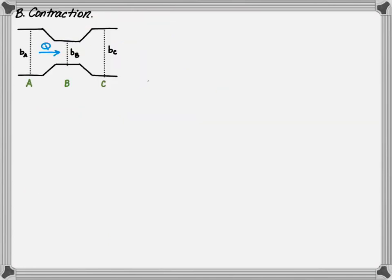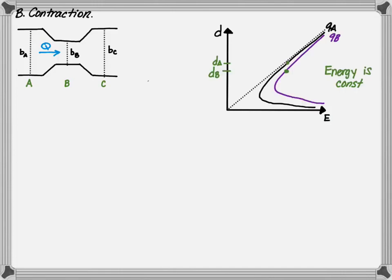A contraction within a channel will occur at a bridge. The plan view provided shows that as the flow moves from point A to point B, there is a contraction within the channel which reduces the base width. A specific energy diagram shows the depth of flow at point A and point B, based on the fact that the specific energy is constant through the contraction. The unit discharge at point A is shown with a black line, while the unit discharge at point B is shown as a purple line, and it shows that the depth at point A will decrease to the depth at point B as the flow moves through the channel.